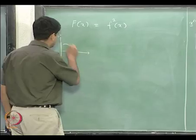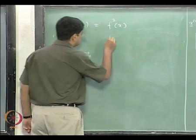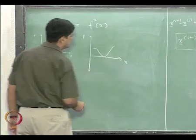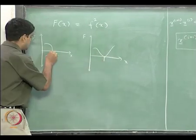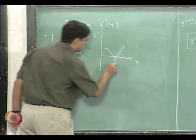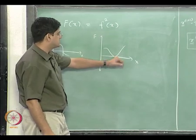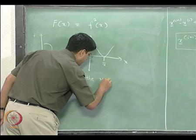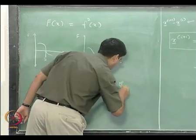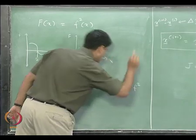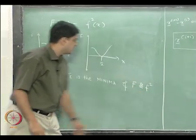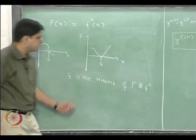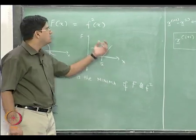For a general function of this sort — this is f versus x — our capital F(x) is going to look like this, where the two functions share the same solution values. If we call this the solution x-bar, x-bar is the minimum of F, which is defined as f². We can use this property to get an improvement in the Newton-Raphson method.